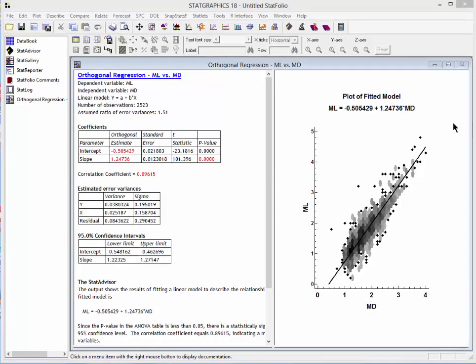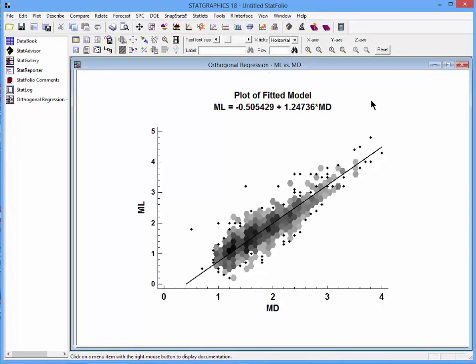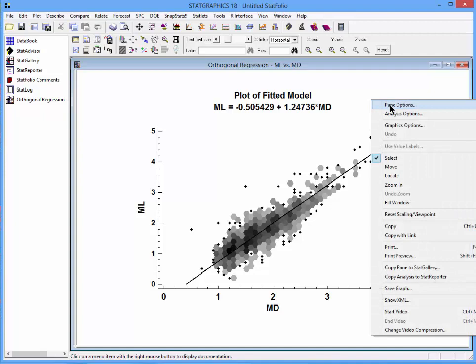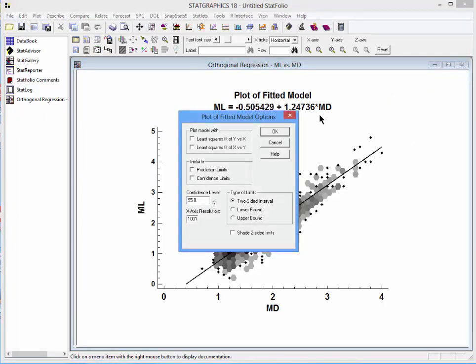I'll now double-click on the graph to take a closer look. If I click my right mouse button and select pane options, I can add two other fits to the plot.